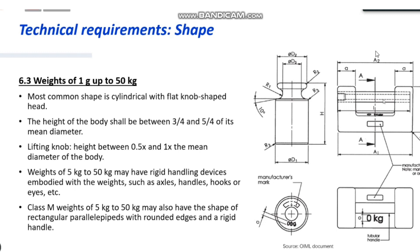For anything above 5 kg up to 50 kg, it's quite heavy, so we can allow some rigid handling devices with the weights, as shown on the diagram on the left. Such as axles, handles, or hooks and eyes. For class M weights of 5 kg to 50 kg, they can also have a shape of a rectangular parallelepiped with rounded edges and a rigid handle — again, just because it's heavy, so we allow some handling device.